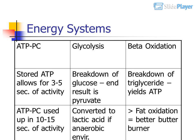The three energy systems are ATP-PC, glycolysis, and beta-oxidation. Stored ATP allows for 3 to 5 seconds of activity. Breakdown of glucose results in pyruvate; breakdown of triglycerides yields ATP. ATP-PC is used up in 10 to 15 seconds of activity. Pyruvate is converted to lactate if anaerobic. Greater fat oxidation equals being a better butter burner.